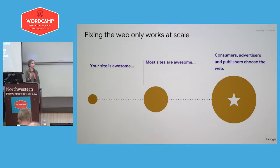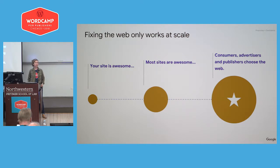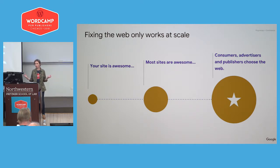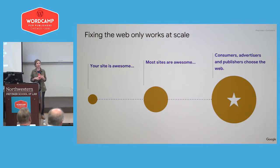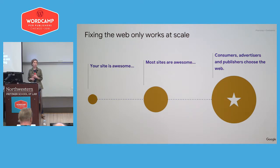That brings me to the last section of this talk: addressing the challenge of modernizing the web at scale. This wide lens is important because while any of you are capable of writing beautifully optimized code, what ultimately matters for the health of the web overall is not only that a handful of us can build super-fast sites, but that the web becomes a smooth, fast experience so that consumers, advertisers, and new creators coming online decide to choose the web.